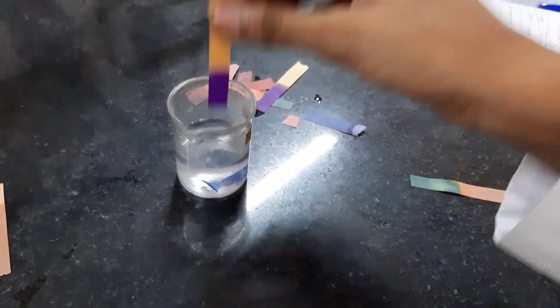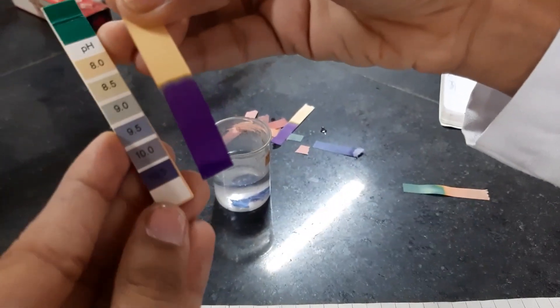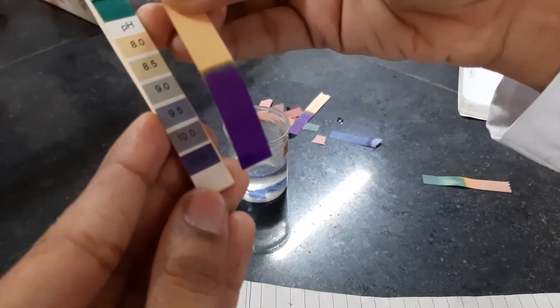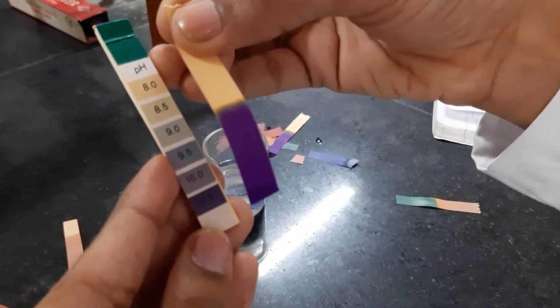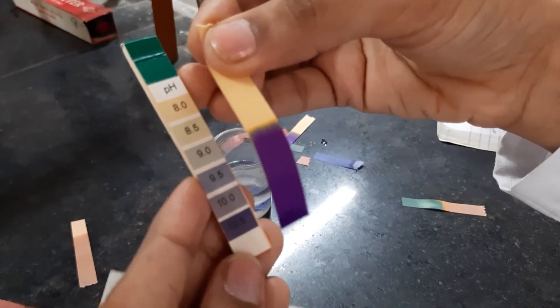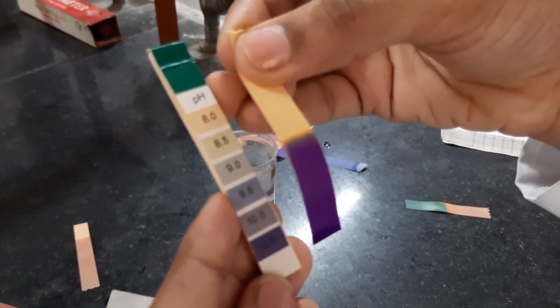Dip the litmus paper in the urine sample. Now we can see the color change. Red litmus paper has turned into blue. The color is compared with the pH scale and the reading is noted. Here we can see that the